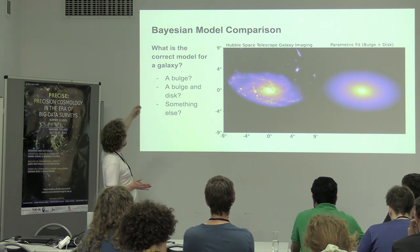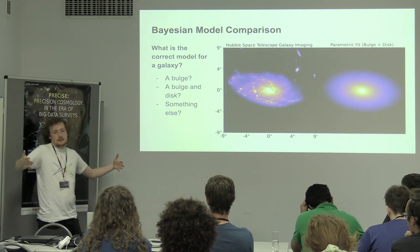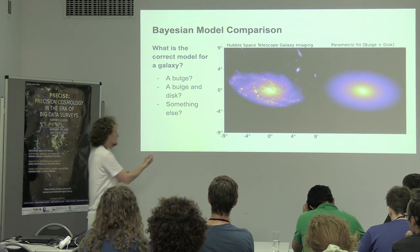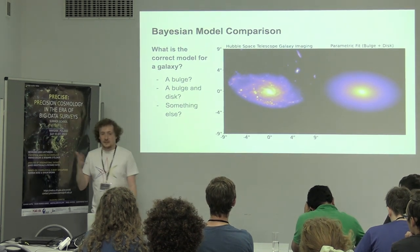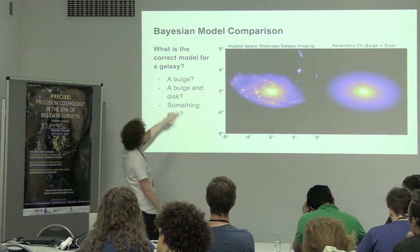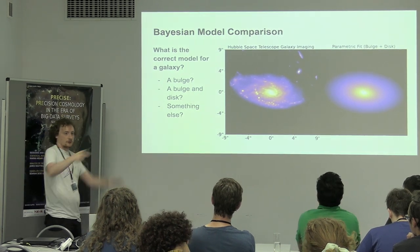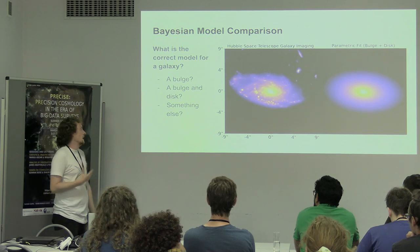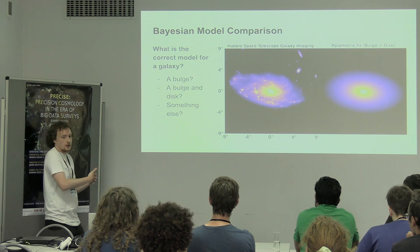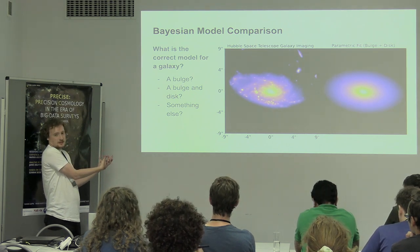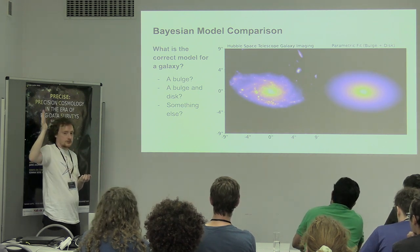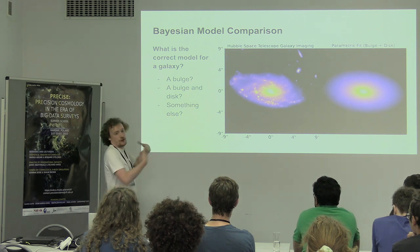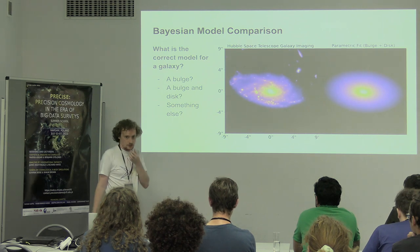Bayesian model comparison basically amounts to: given some data, trying to figure out what model best represents that data — what model is the most likely to be the true representation. The sort of question you might ask is: if I've got a Hubble Space Telescope image of a galaxy, what is the correct model to fit? Is it a single de Vaucouleurs profile, so this galaxy is just a bulge? Is it a de Vaucouleurs profile representing the bulge plus an exponential profile representing a disk component where stars are born — two components, a bulge and a disk? Or do we need to put a bar in there? These are the tools you need to take a dataset and figure out in the correct way what the most likely original structure in that dataset is.